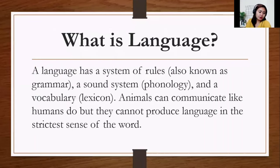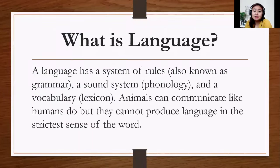First, we're going to talk about language. What is language? Technically, it is defined as a system of rules or grammar. It includes phonology and vocabulary. Now, do animals have language? The answer is no. They don't have language in the strictest sense. They don't have language, but they are communicating with each other. They can communicate, but they are not producing the same kind of language that we have.